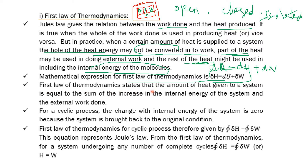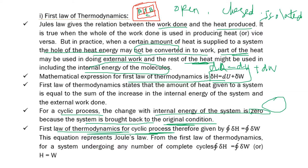The first law of thermodynamics states that the amount of heat given to a system is equal to the sum of the increase in the internal energy of the system and the external work done. For a cyclic process, the change in internal energy is equal to zero because the system is brought back to its original condition. For a cyclic process, the closed integral of dQ equals the closed integral of dW.